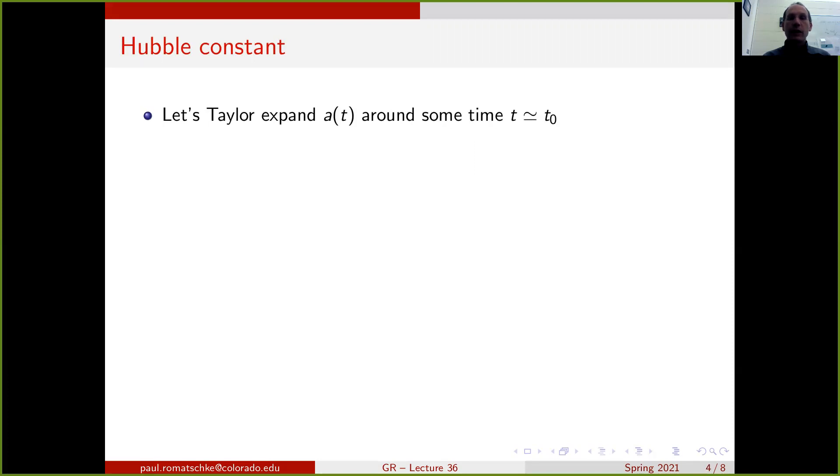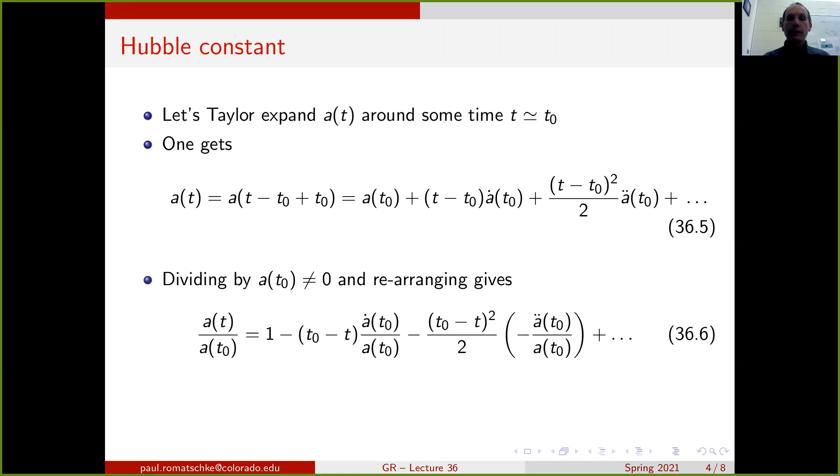Let's now talk about the Taylor expansion of the scale factor around some time t0. If we rewrite a(t) as a(t - t0 + t0), we can Taylor expand for small t minus t0. If we ignore all derivatives, this is just equal to a(t0). The first correction term is t minus t0 times the first derivative, which I denote as a dot. There's a second derivative term, t minus t0 squared over 2, and there are lots of other terms. If we divide this equation by a(t0), which we assume to be non-zero, and we arrange the signs, we find the following equation.